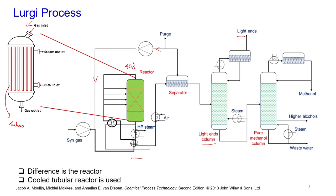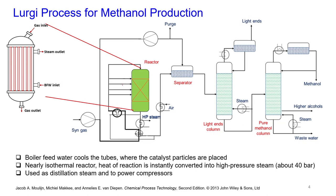Syngas enters the reactor from the inlet and the effluent exits similarly to the conventional process. The boiler feed water cools the tubes by flowing in the space between them, carrying away the heat of reaction. Inside the tubes themselves, the catalyst particles are placed. With this boiler feed water cooling, the reactor operates in a nearly isothermal manner, and the heat of reaction is instantly converted into high pressure steam at about 40 bar.